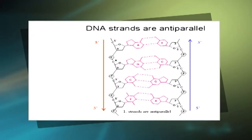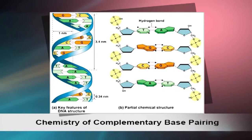Watson and Crick base pairing: The orientation of the Watson-Crick model of DNA is antiparallel — that is, their 5' to 3' directions are opposite. The members of each base pair can fit together within the double helix only if the two strands of the helix are antiparallel. A consequence of these base pairing requirements is that each strand of a DNA molecule contains a sequence of nucleotides exactly complementary to the nucleotide sequence of its partner strand. A is paired with T through two hydrogen bonds, and G is paired with C through three hydrogen bonds.